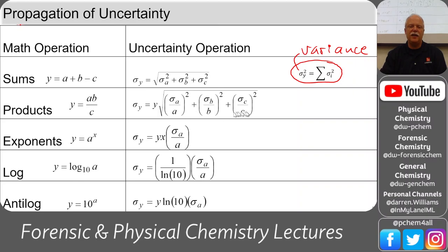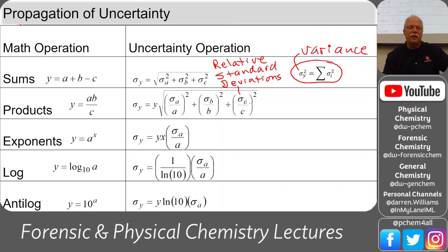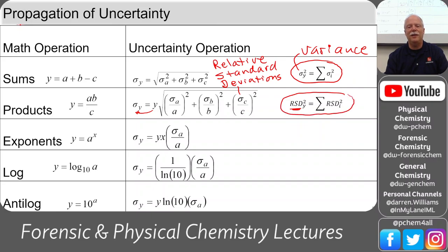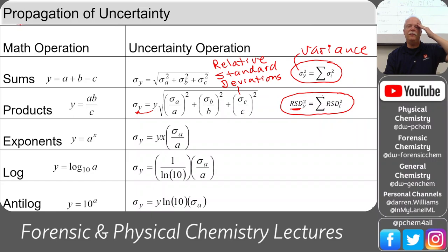For products, we use relative standard deviations (RSDs). The RSD of the result squared equals the sum of all the RSDs of the things that are multiplied and divided. This is a very simple equation — easy to remember. You'll have all of these equations on the exam; I'll provide them, but you need to know how to use them.